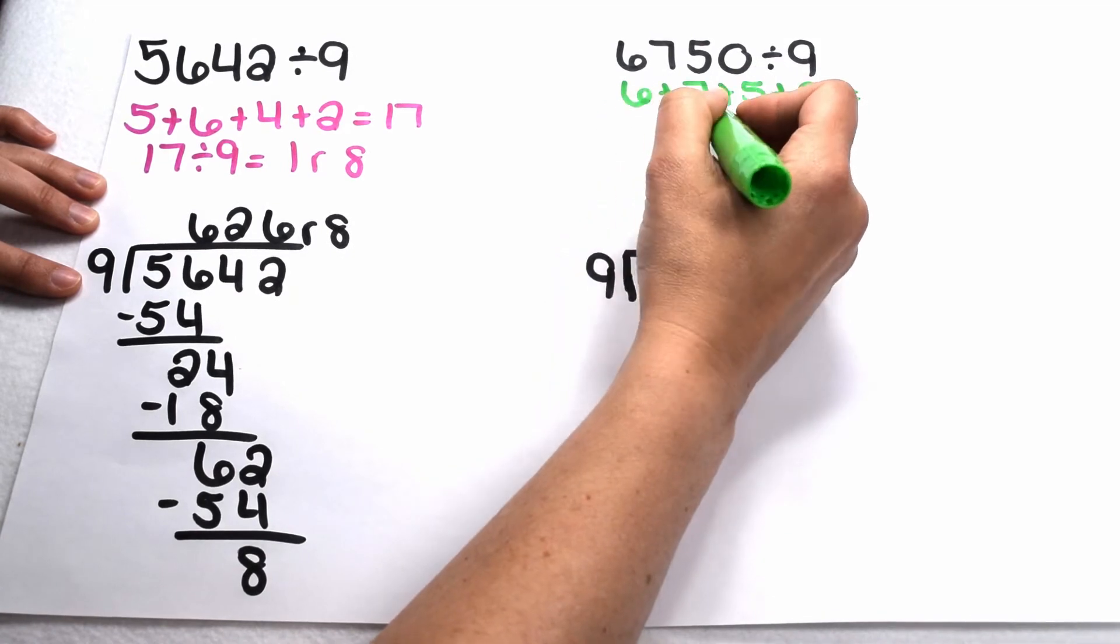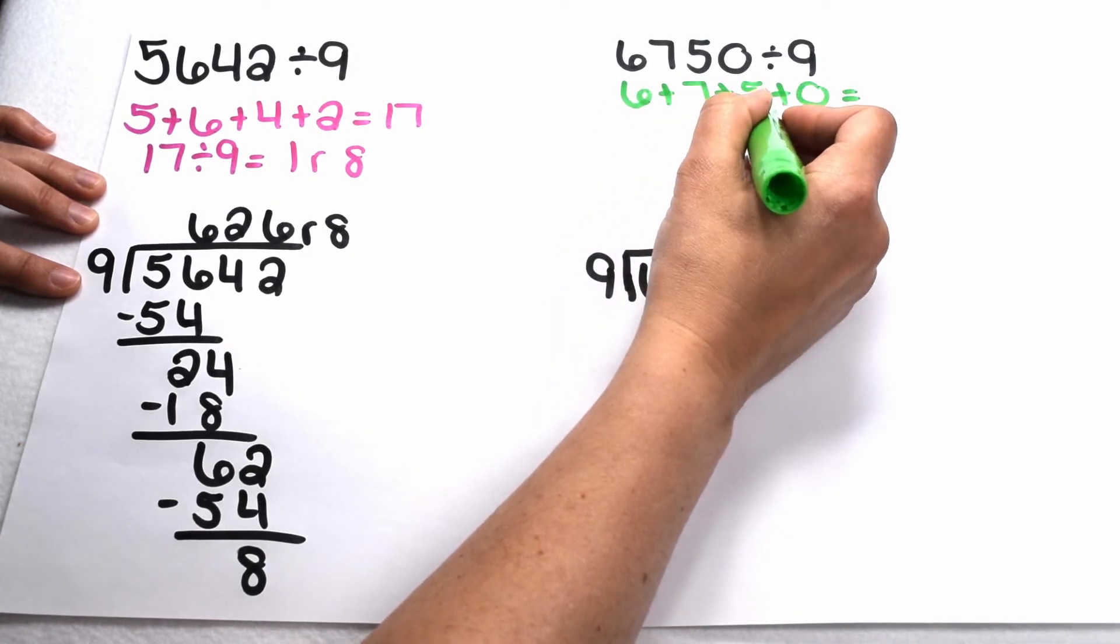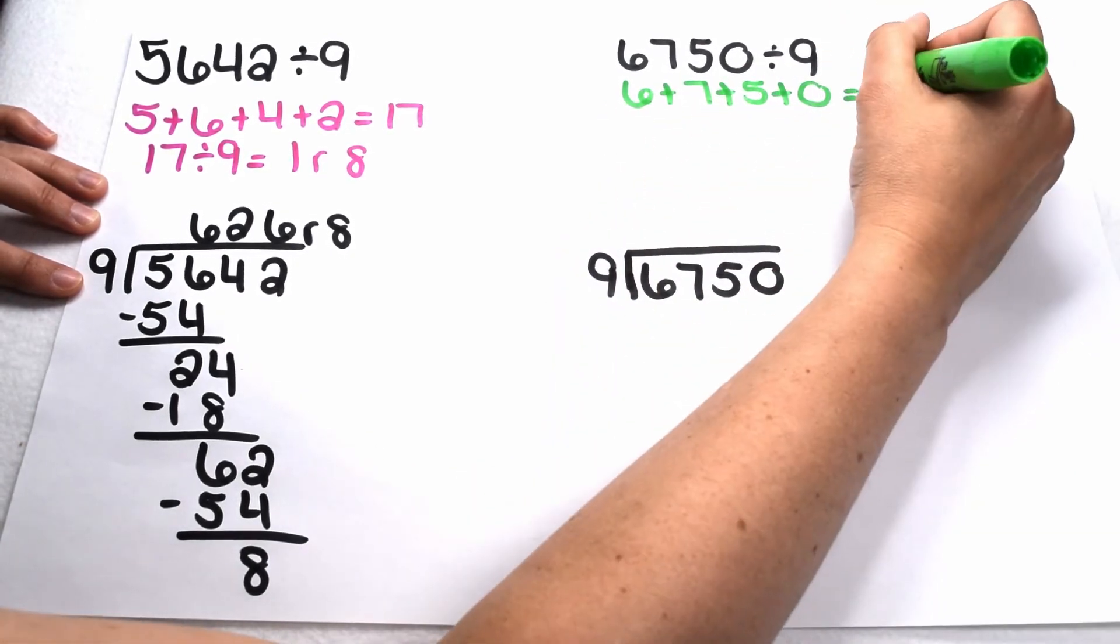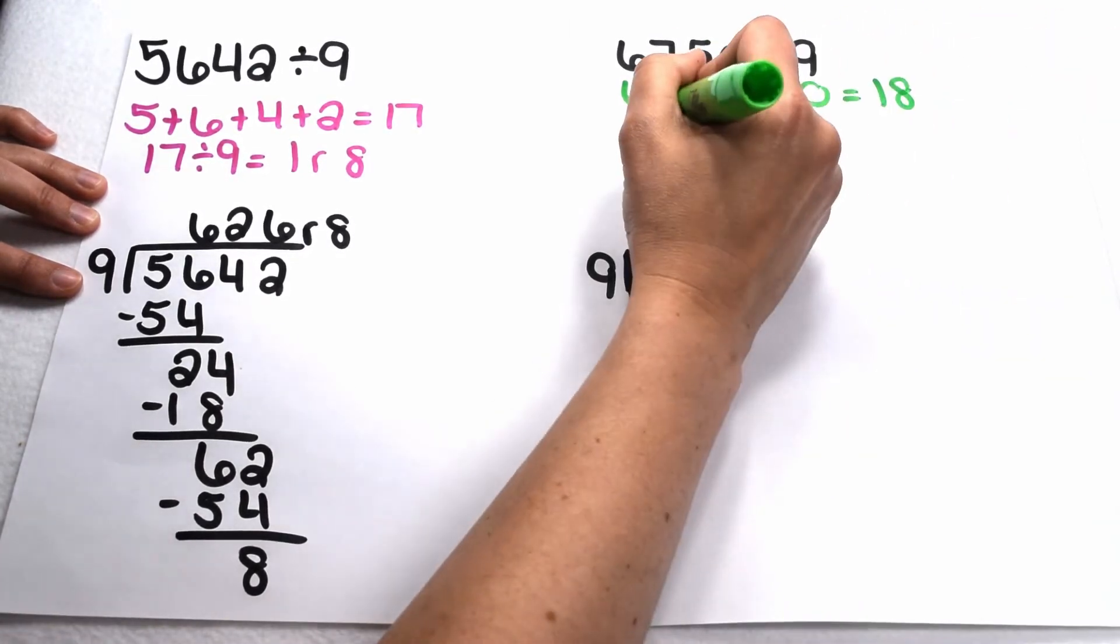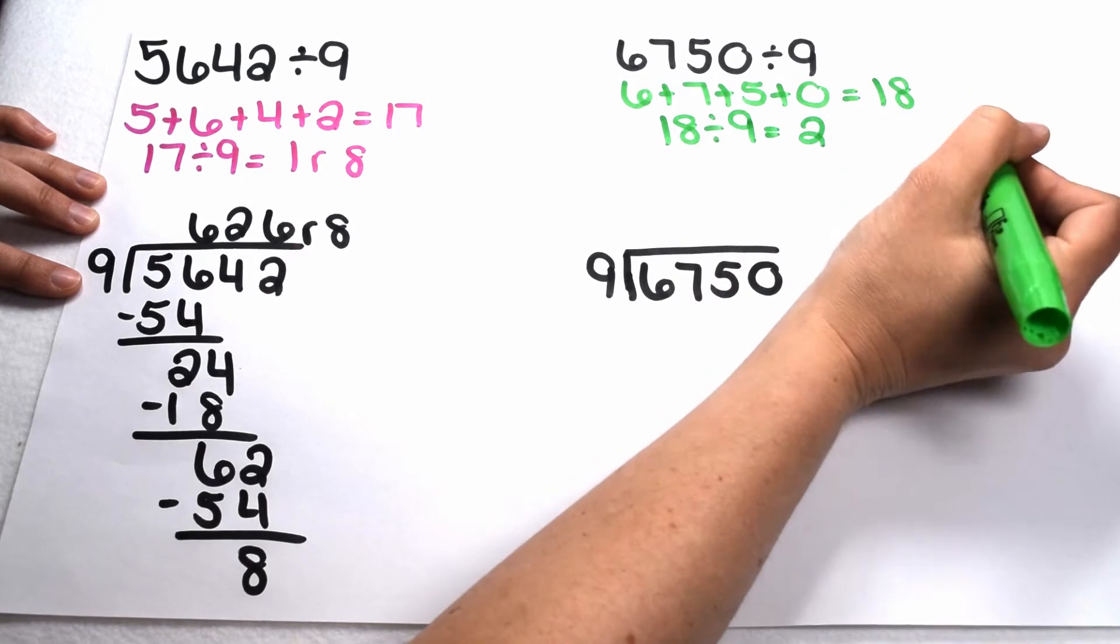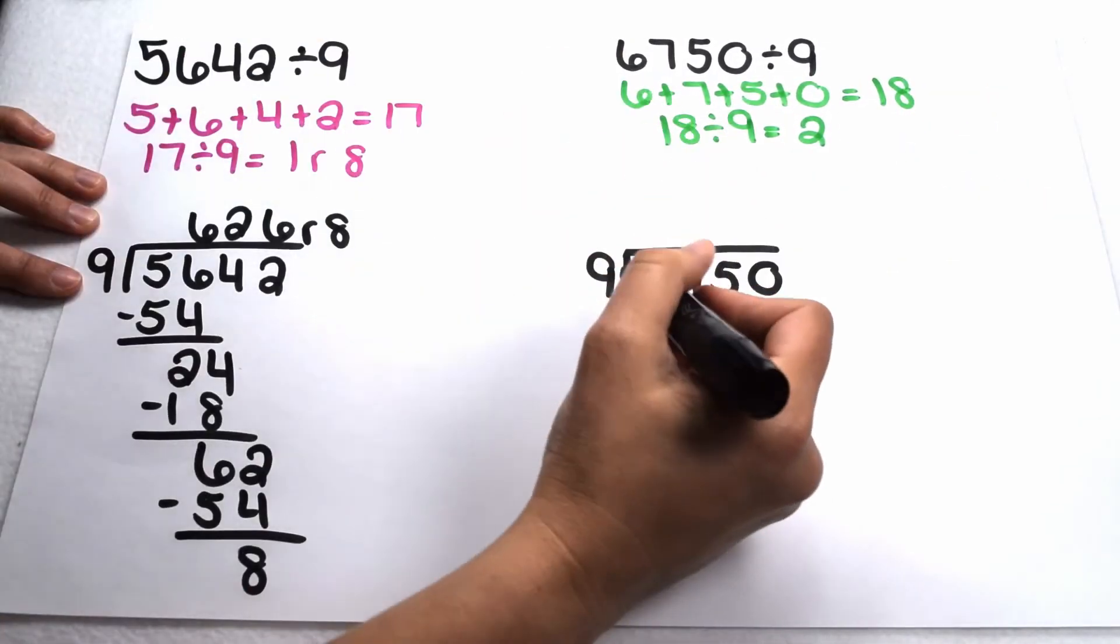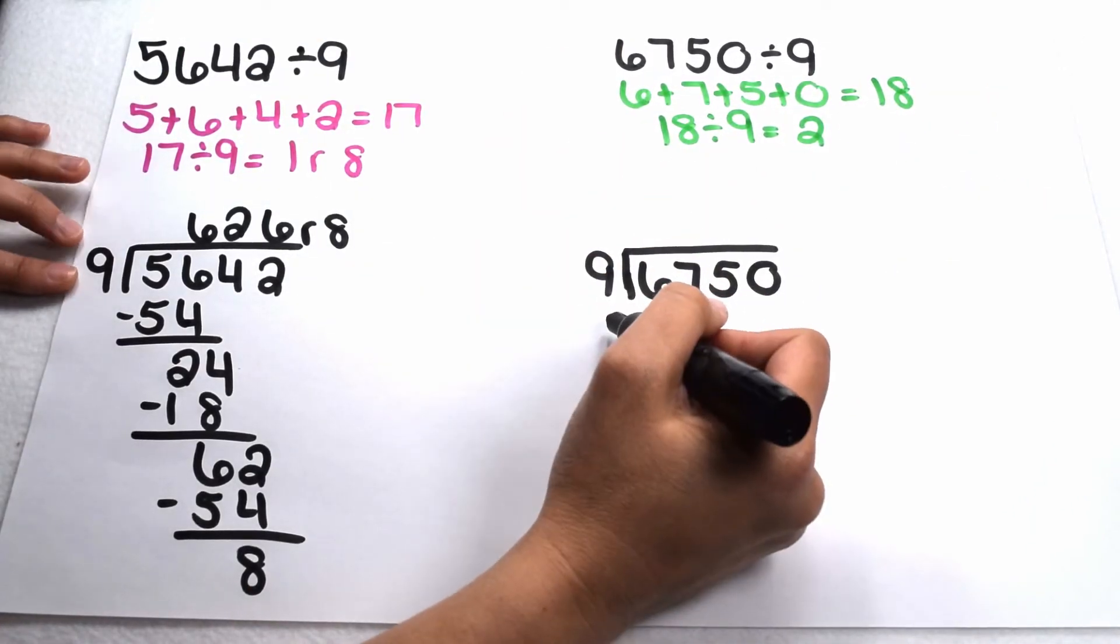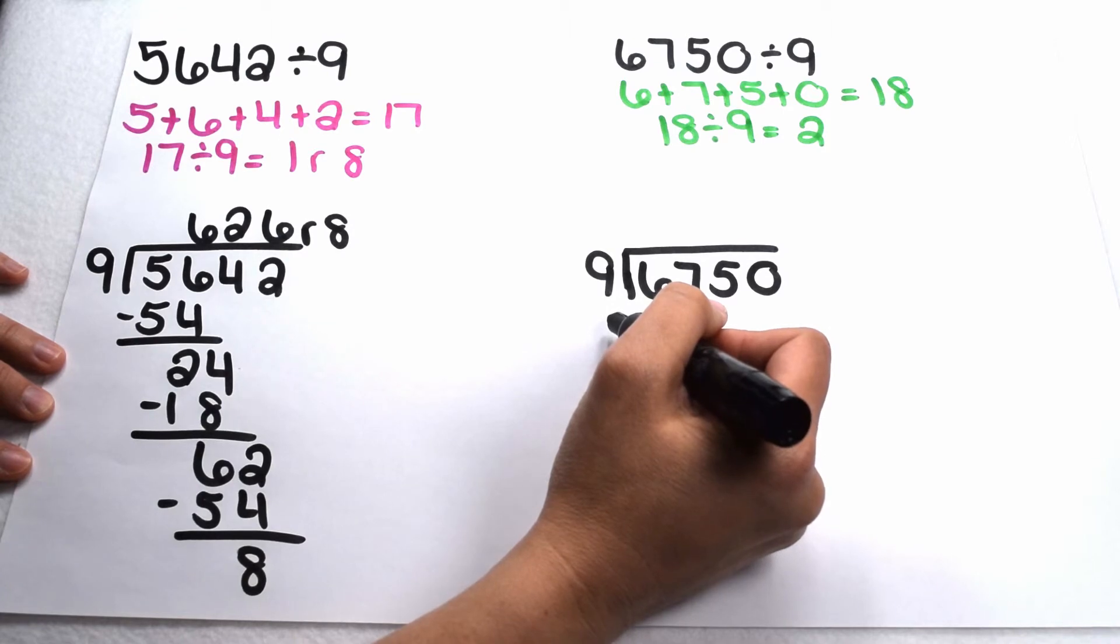When I add together 6 plus 7, I get 13. 13 plus 5 gives me 18. 18 plus 0 is 18. 18 is divisible by 9; 18 divided by 9 gives me exactly 2. This tells me when I divide 6,750 by 9, it should go in evenly with no remainders. Let's test it out.